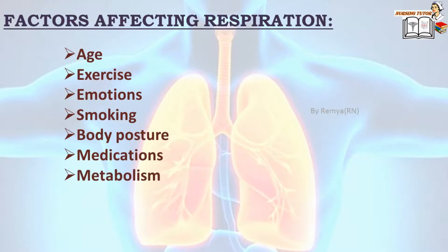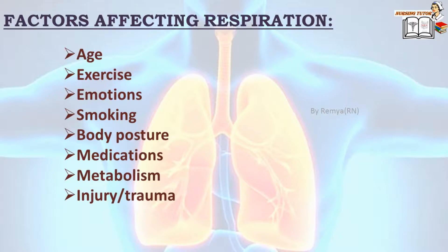Metabolism — changes occurring in metabolic rate due to hormones may alter the respiratory rate. Injury or trauma — trauma that impairs the brainstem inhibits the respiratory rate and rhythm. Pain — pain changes rate and rhythm; the client takes shallow breaths to avoid pain.